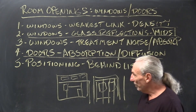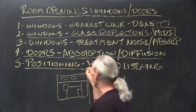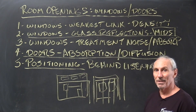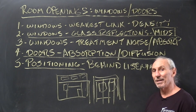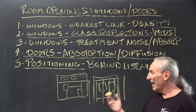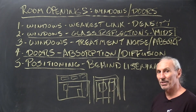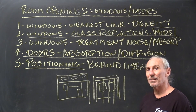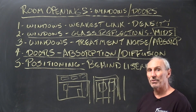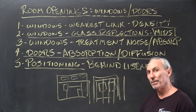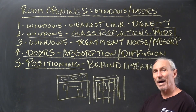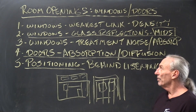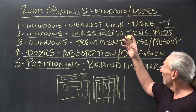In an ideal world, if we have our choice of where to position doors and windows, we want to put them behind our listening position. We can treat them then and it won't bother us. The glass behind us won't bother us as much as the glass on each side wall at ear level. So get your doors and windows behind you — if you're designing new rooms or considering a property with a room, get the doors and windows behind you so you can treat them and they won't have such a negative impact.